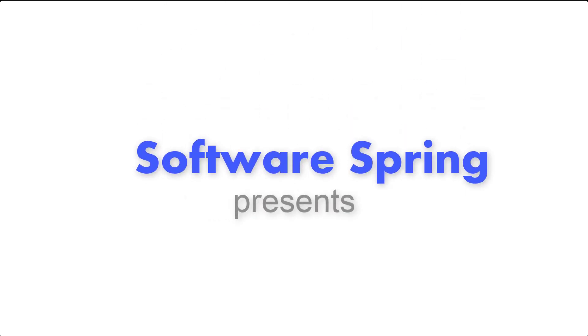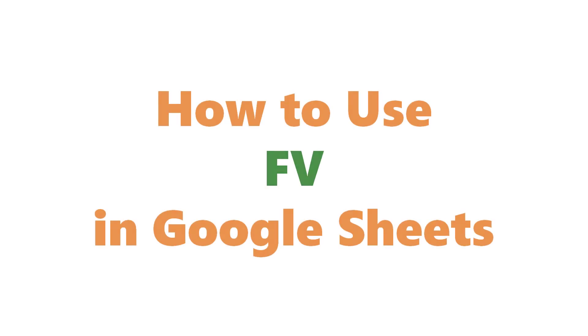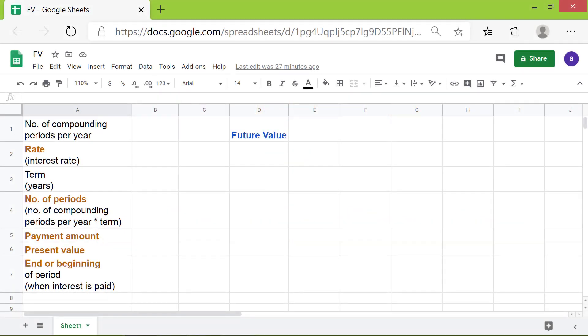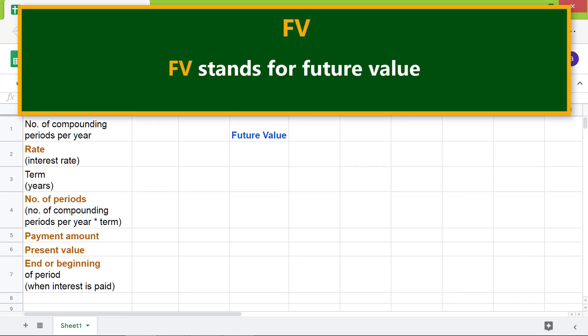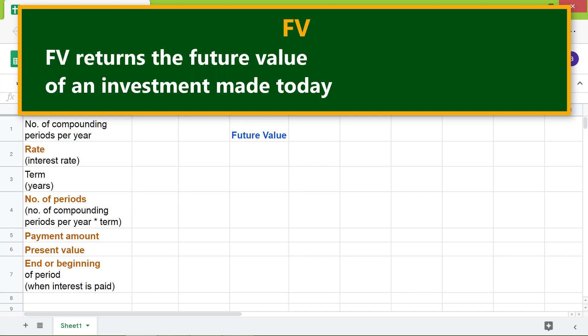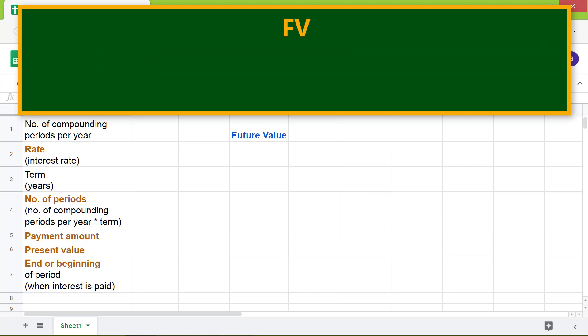Welcome to the tutorial on the FV function. Let's begin with an introduction to FV. FV stands for future value. FV returns the future value of an investment made today based on the specified data like investment amount, interest rate, and term.